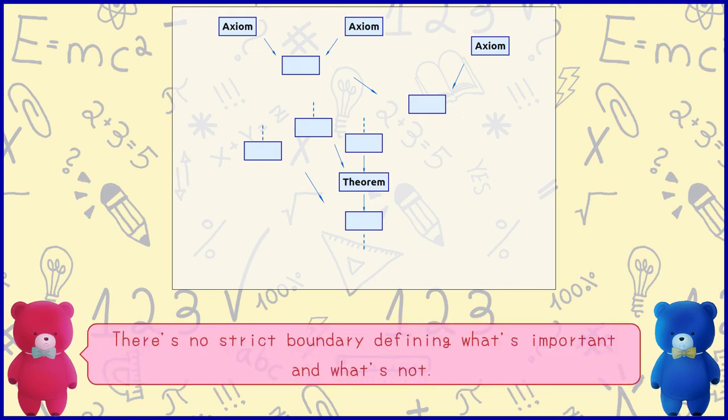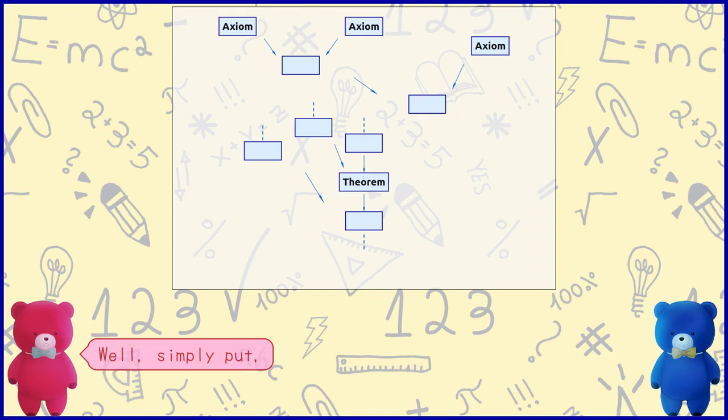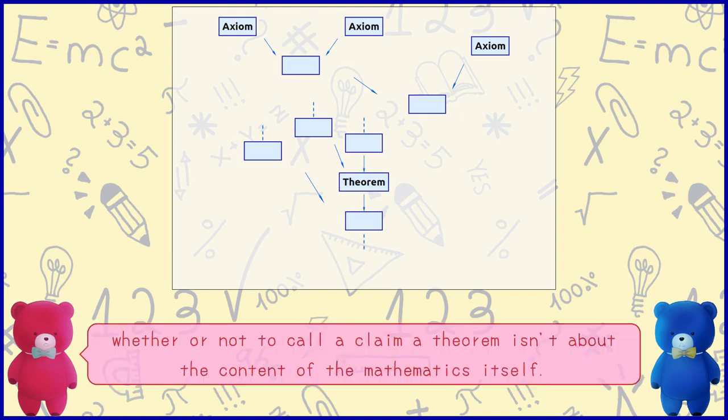There is no strict boundary defining what's important and what's not. In math, it doesn't have to be strict. Simply put, whether or not to call a claim a theorem isn't about the content of the mathematics itself.